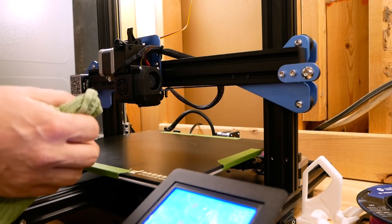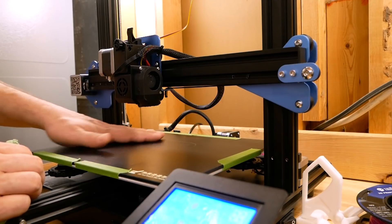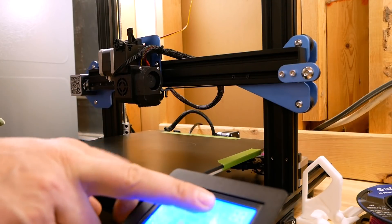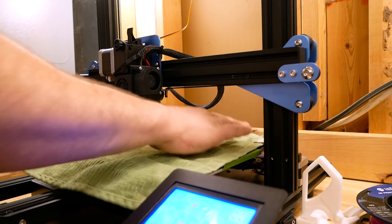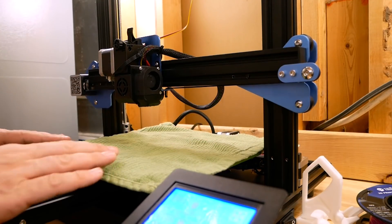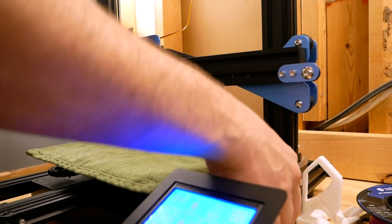The next thing to do is to raise the z-axis just a little bit to give you some room to work. You can do that in Prepare, Move Axis, Move Z-Axis. And I'm going to put a towel to protect the bed surface while I work, then I'm going to turn the machine off.